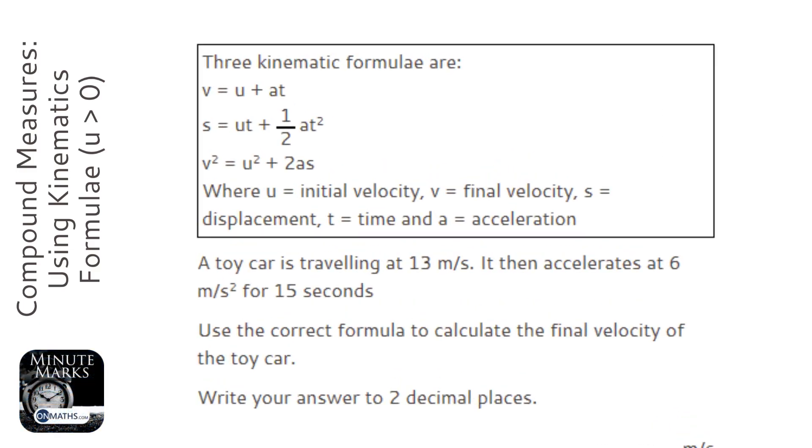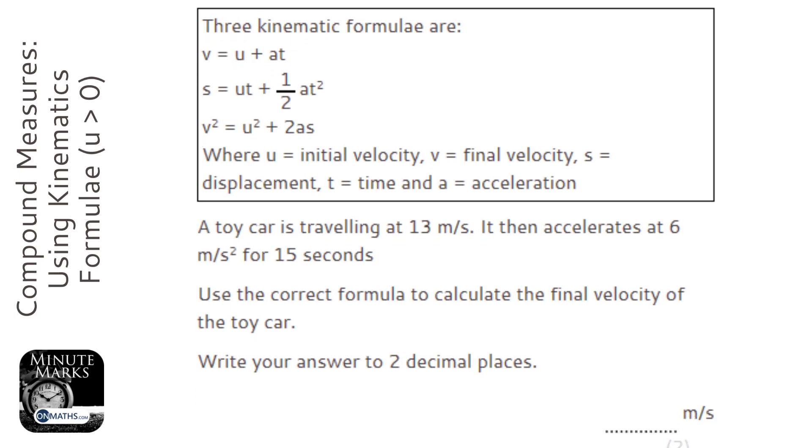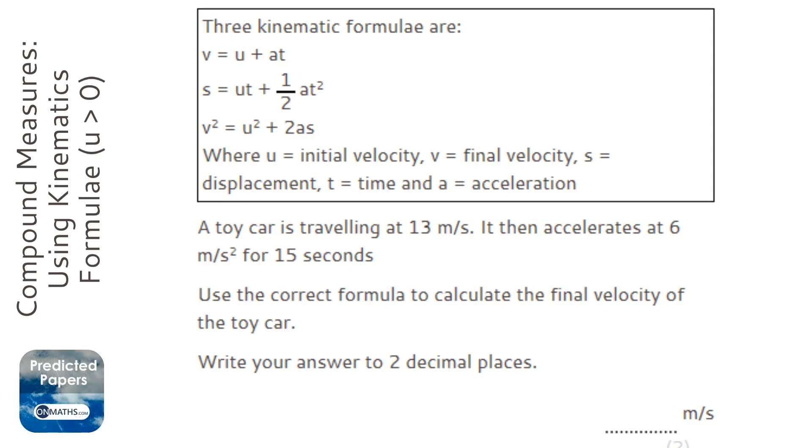We're given three kinematic formulas, or SUVAT equations, and we're asked to use them to answer this question. But it's not going to tell us which one to use. The question says a toy car is traveling at 13 meters per second, so the initial velocity is 13 m/s.